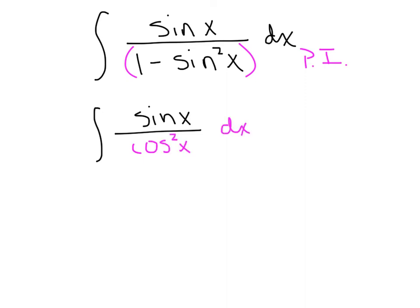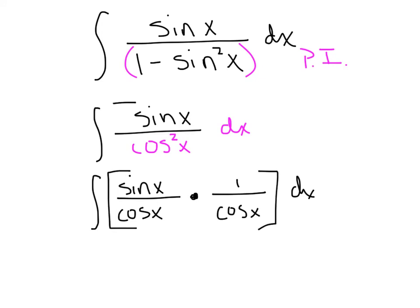All right, now here's where the creativity kicks in. Is it legal to rewrite this as the product of two smaller, more innocent fractions? In other words, could I say sine over cosine times 1 over cosine? And at this point, just challenge yourself and ask, is the product of these two equivalent to this one that I started with? And I think we'd quickly agree with yes. All right, now simplify that expression a little bit more. Sine over cosine is really tangent. One over cosine is really secant.